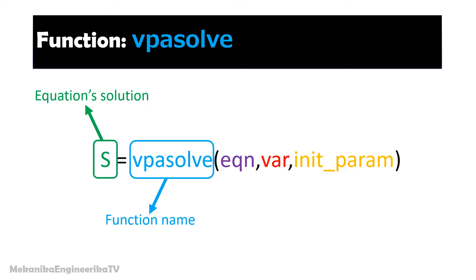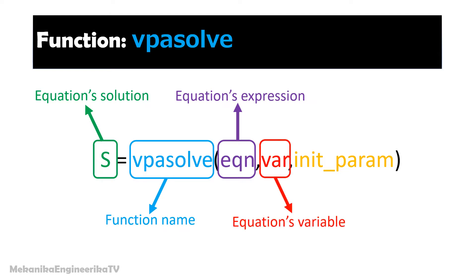Commonly the function uses three inputs. The first input is the equation or the function's expression. The second input is the name of the variable or the equation's unknown. And the third input is the initial value — this is the initial guess of the solution. Numerical solving highly depends on this initial guess. If the equation has multiple solutions, the function gives the solution which is closest to the initial value.